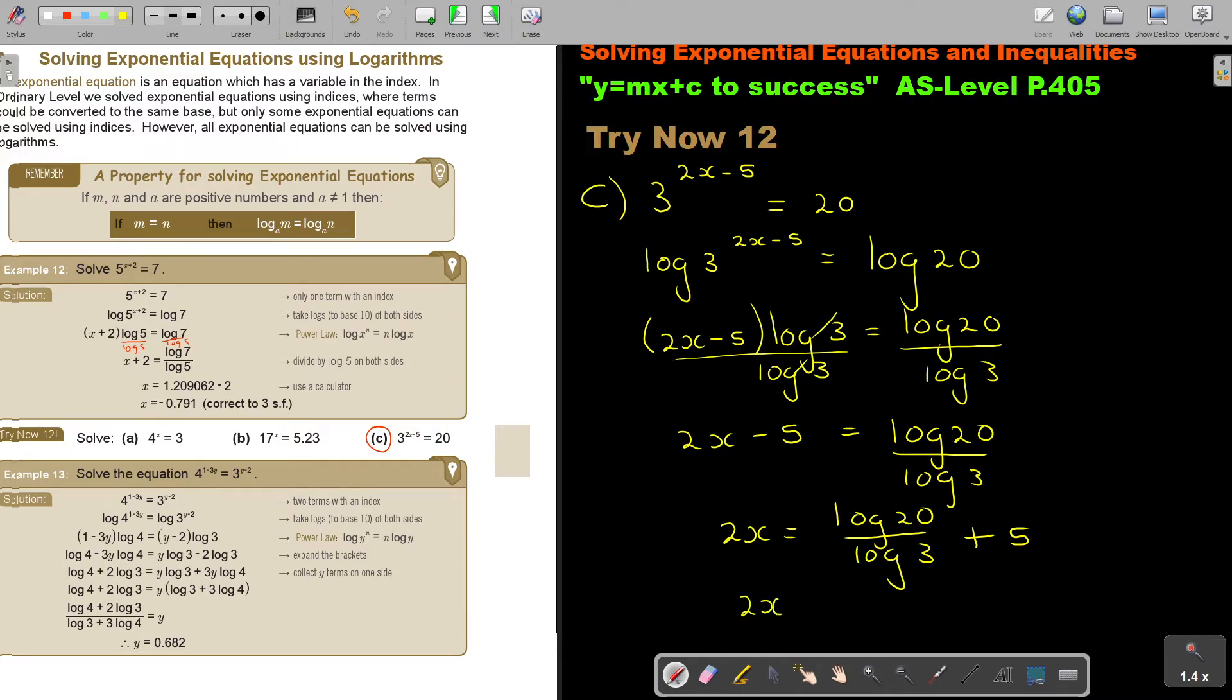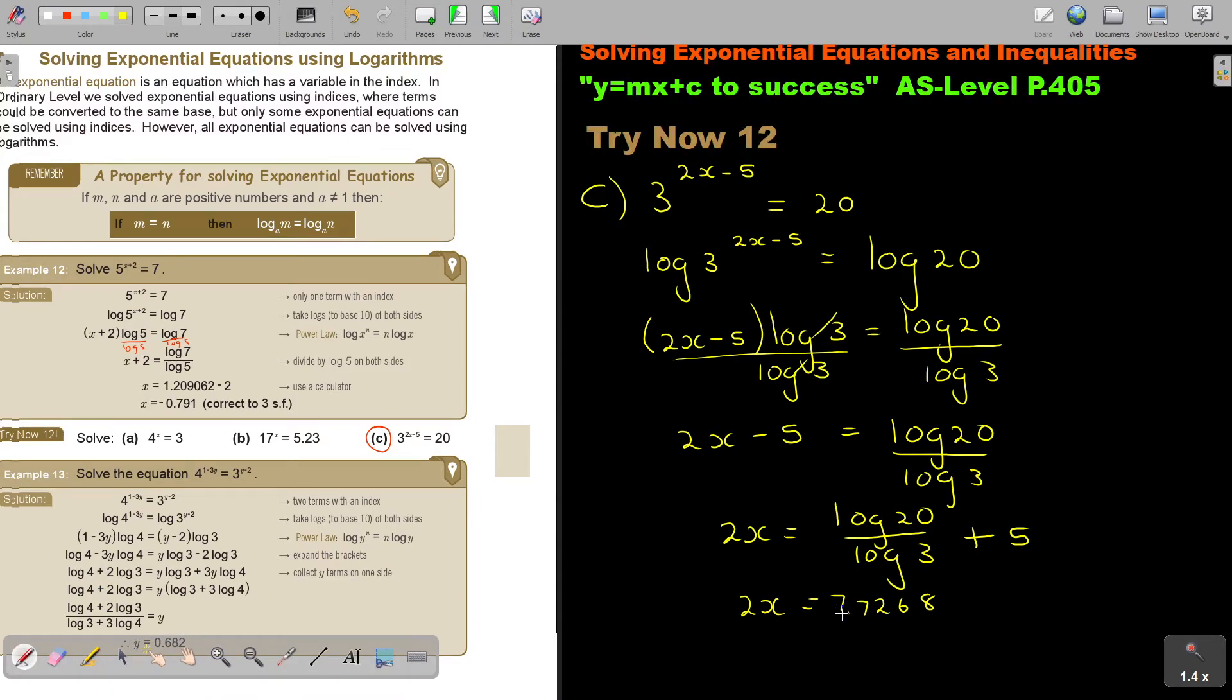If you cannot approximate, say 7.7268, just keep the whole calculator value. Or if you approximate, approximate to 4 or 5 significant figures. Keep it on your calculator and divide by 2.